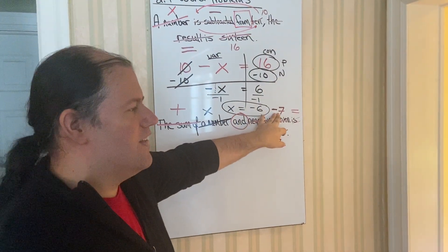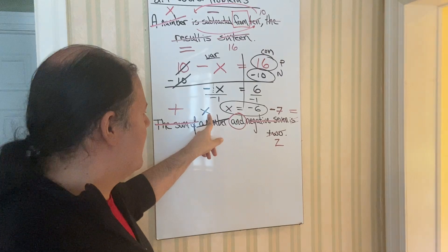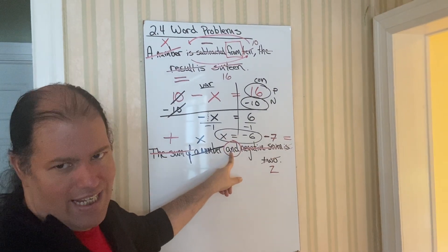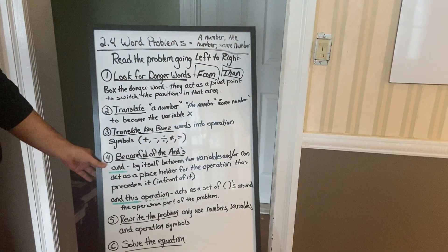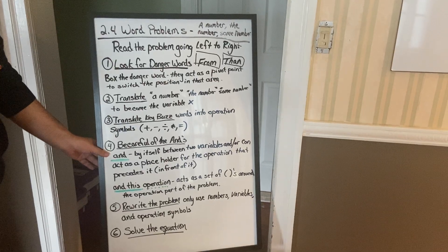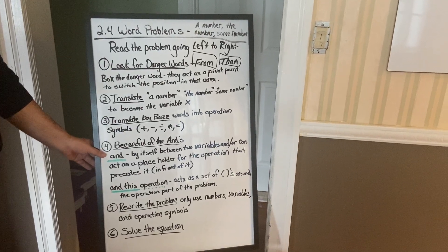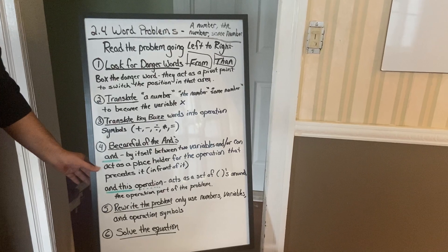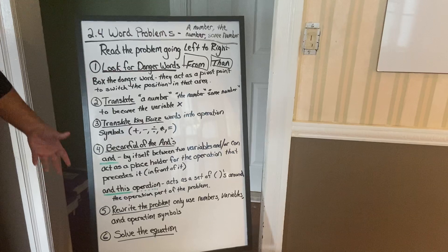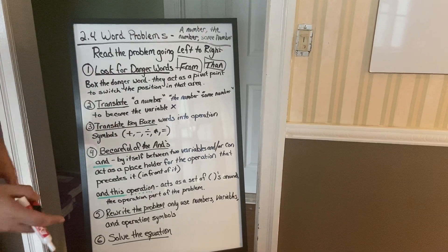So when you have a letter, a variable, and a constant, this is a plain and. Okay? So that's this first and here. It's by itself between two variables and or constant. So it's between, for us, a variable and a constant. Then what do we do? We act as a placeholder for the operation that precedes it. Or basically precedes it. It's a fancy way of saying what's in front of it.